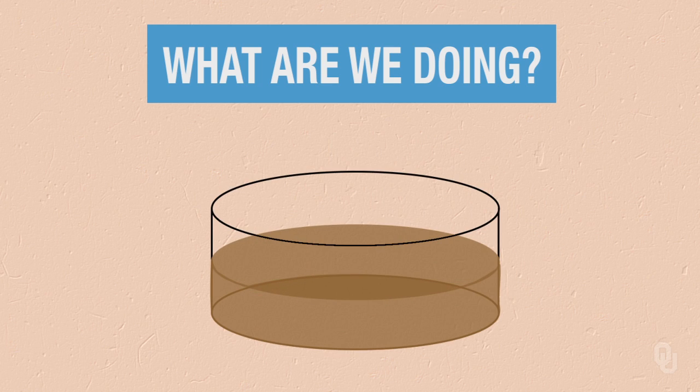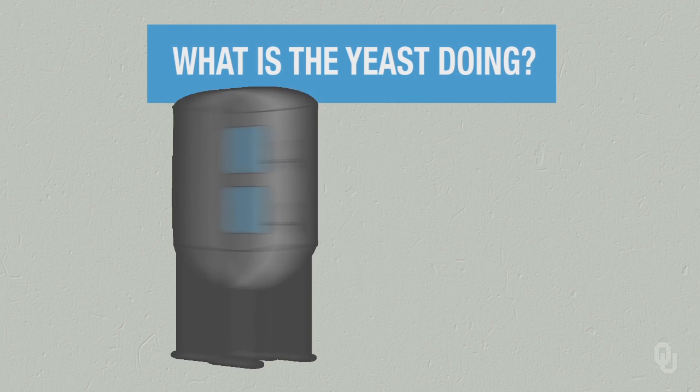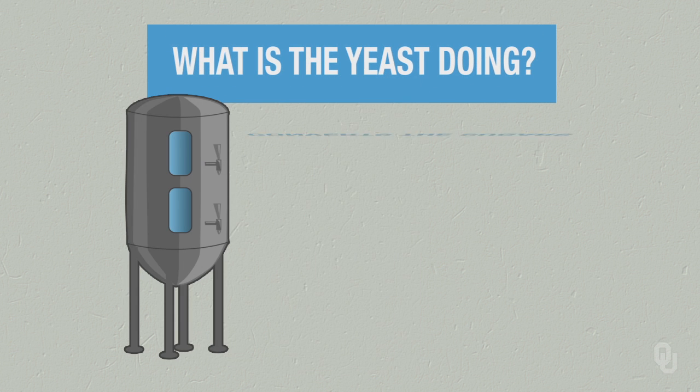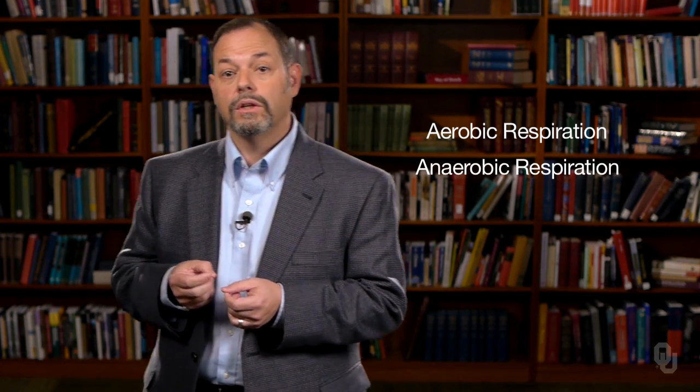We then filter out the hops and bring the wort down to a lower temperature so that the yeast can work on the process. The yeast converts the sugars into ethanol — we don't have beer unless we have the ethanol. The process starts out as aerobic respiration and then transitions to anaerobic respiration. It's this anaerobic respiration that produces the ethanol associated with beer.